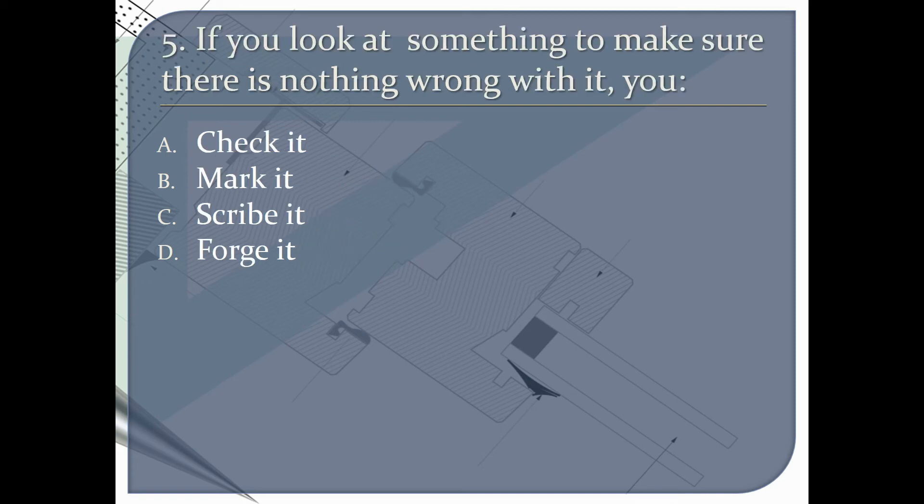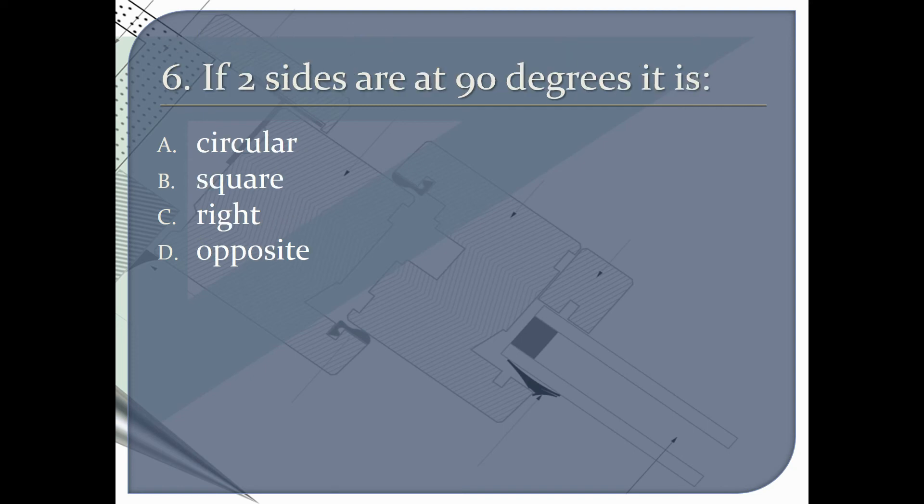If you look at something to make sure there is nothing wrong with it, you A check it, B mark it, C scribe it, or D forge it. If two sides are at 90 degrees it is A circular, B square, C right, or D opposite.